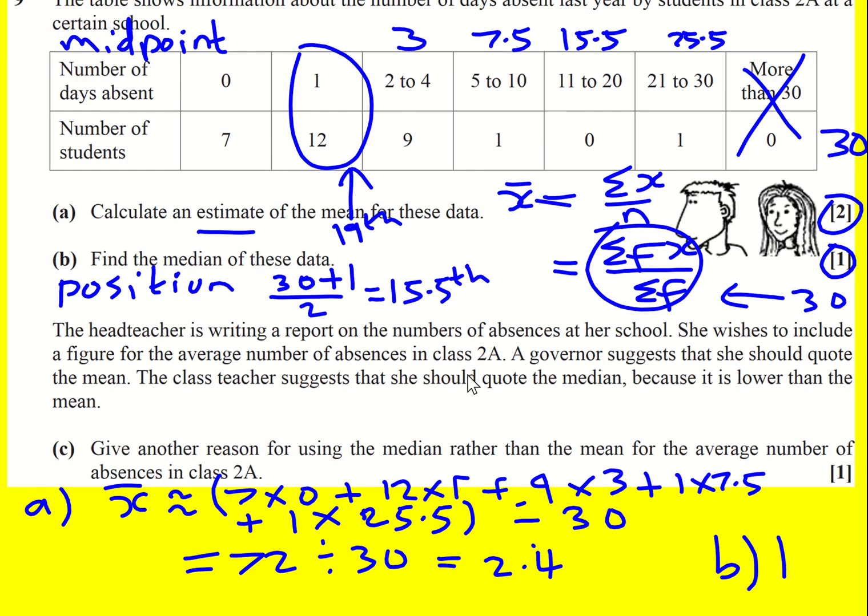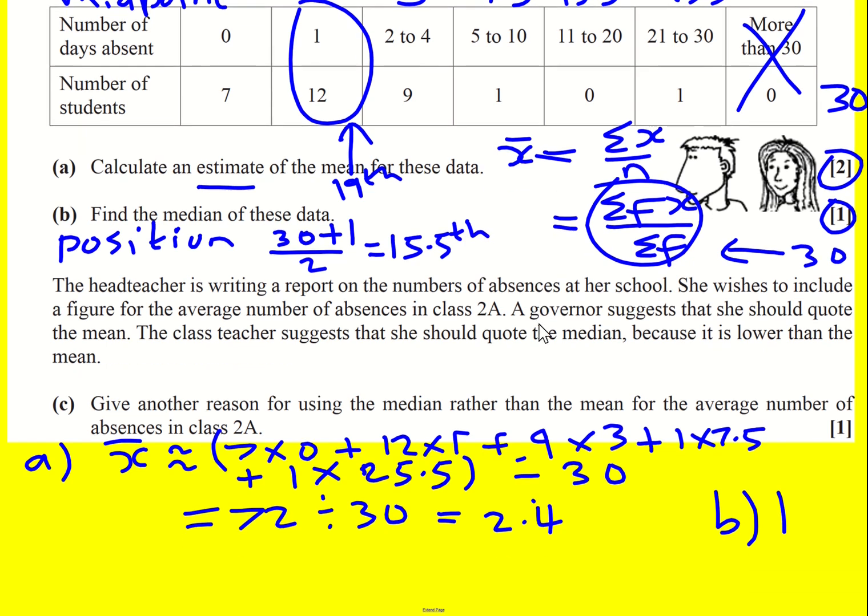Right, then it talks about the fact that the headteacher's writing reports and wants to include a figure for the average number of absences. The governor suggested she should quote the mean. A class teacher suggests that she should quote the median because it's lower than the mean, so you're making your numbers look good. But what's another reason for using the median?